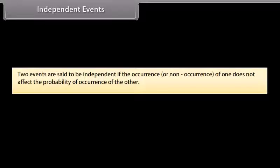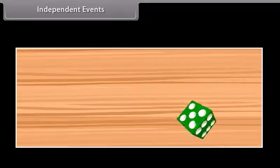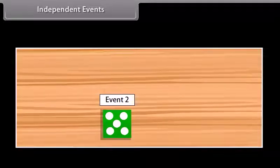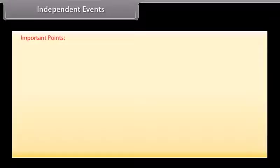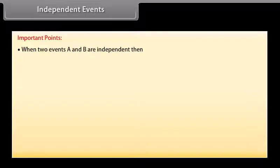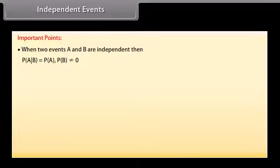Independent Events: Two events are said to be independent if the occurrence or non-occurrence of one does not affect the probability of occurrence of the other. For example, on rolling a dice, let A be the event of getting 6 on the first roll and B be getting 5 on the second roll — these two events are independent. When A and B are independent, P(A|B) = P(A), provided P(B) ≠ 0.